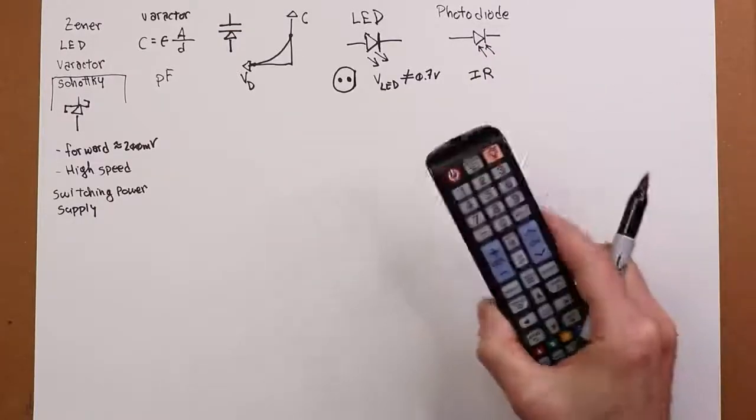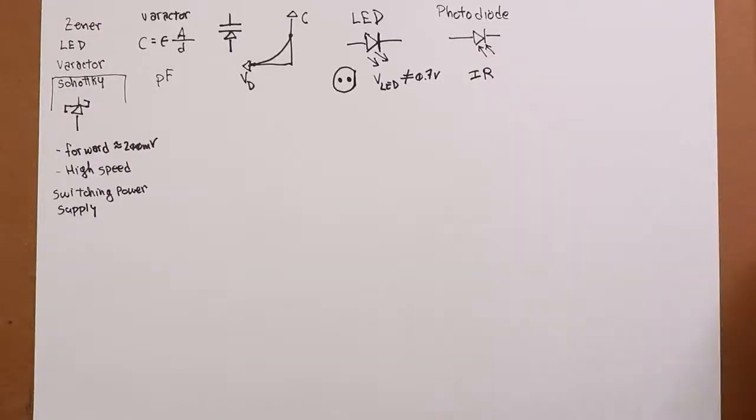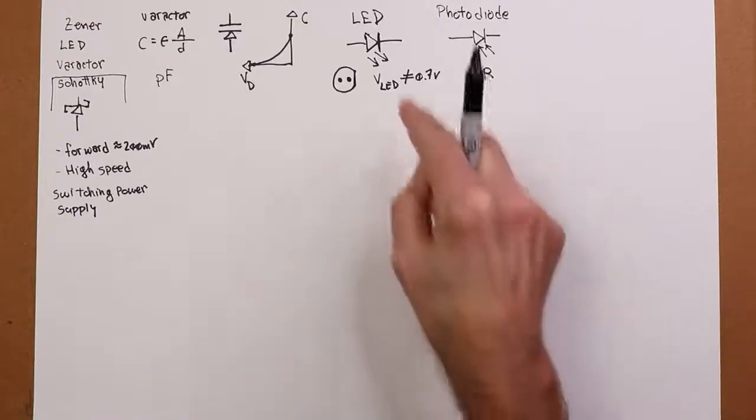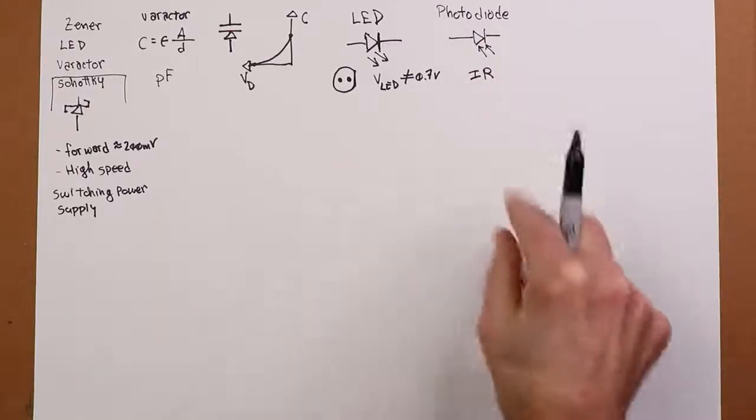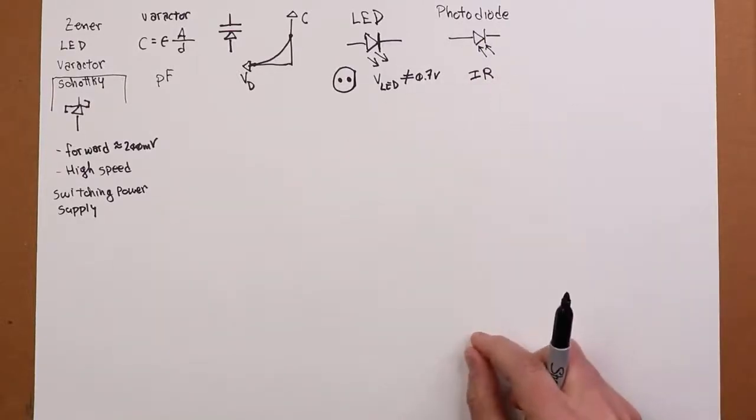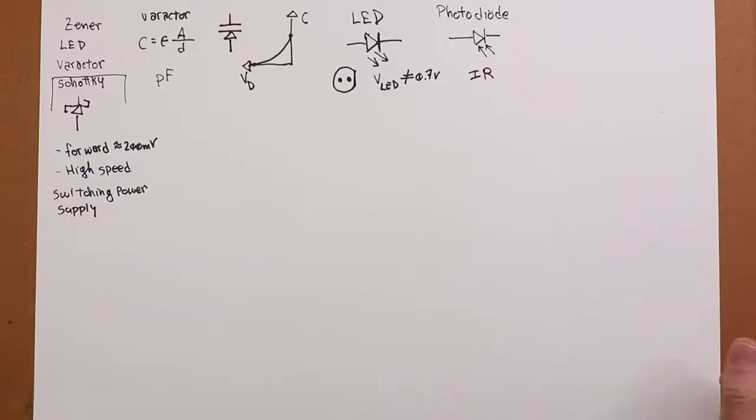But essentially you press a button on here, you say give me the volume, and a series of pulses drive the IR LED. Those are picked up by the photodiode or phototransistor and turned back into normal electrical signals and decoded inside the processor, and the volume goes up or the channel changes or you instigate self-destruct mode or whatever.